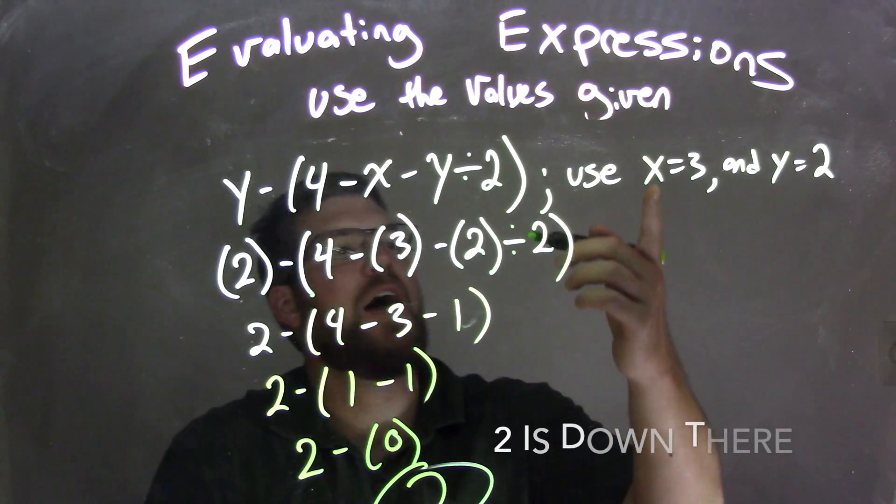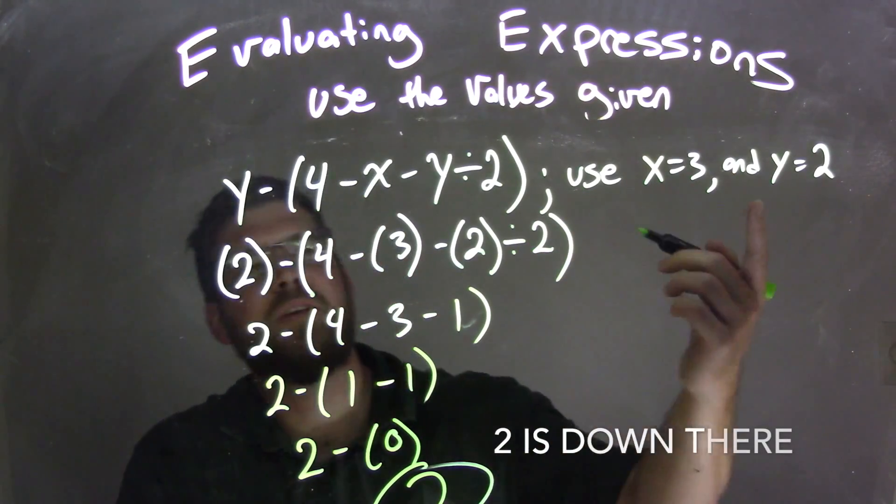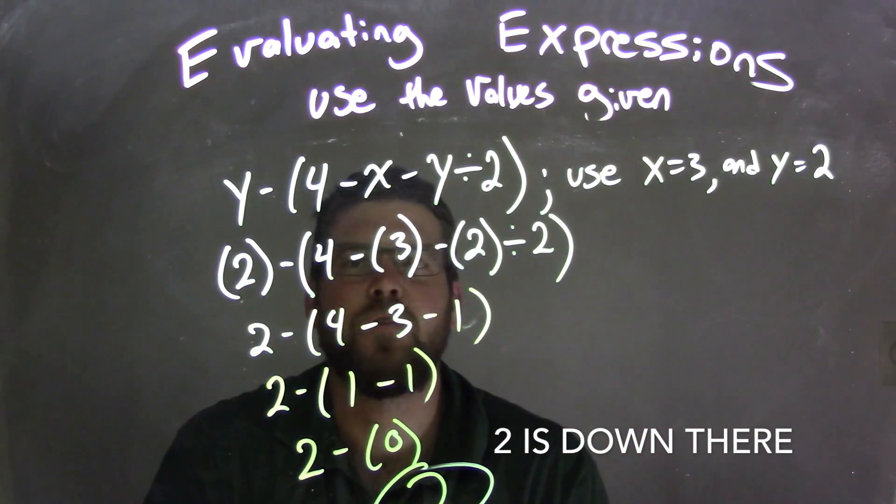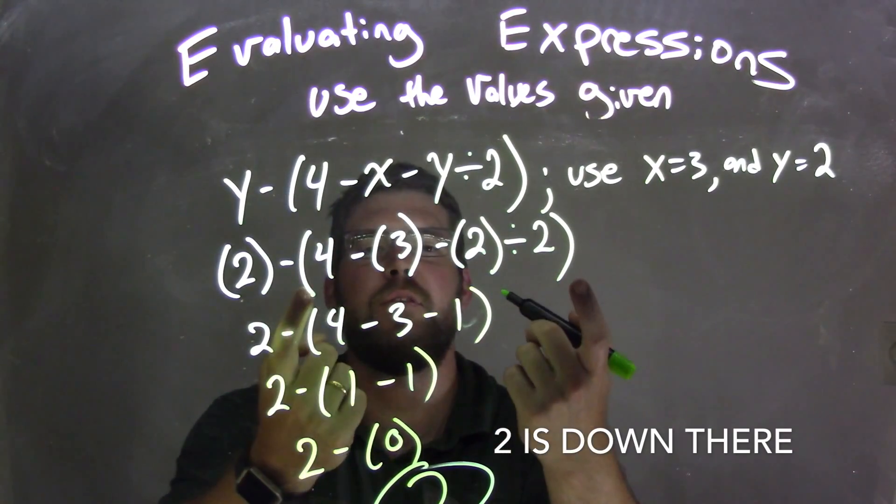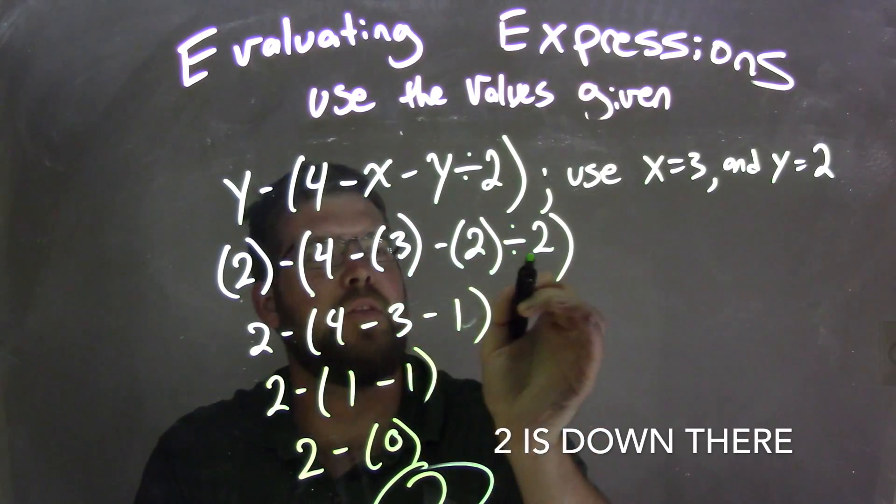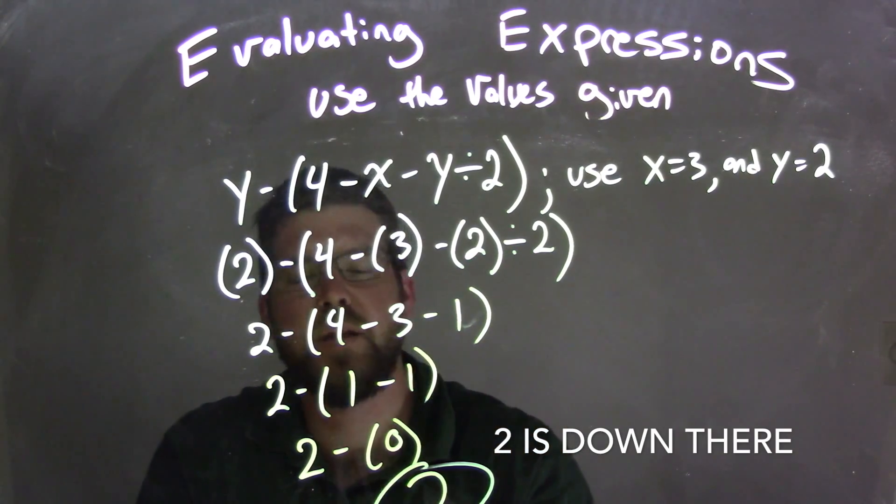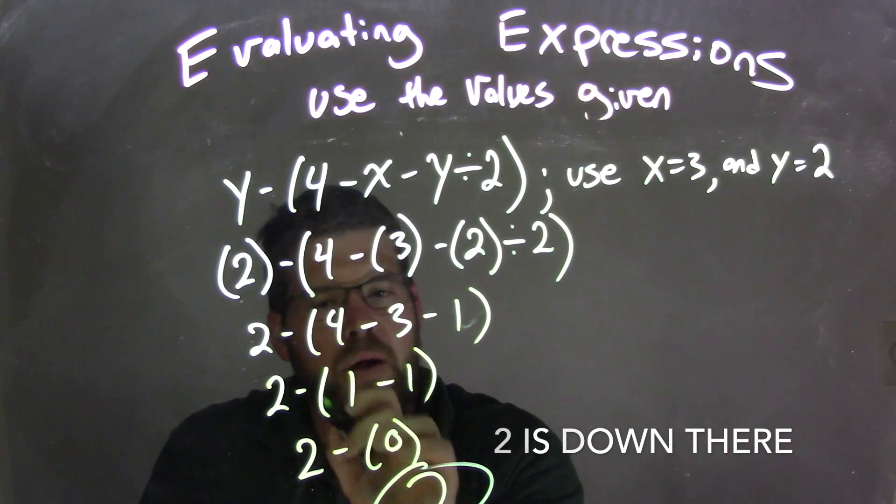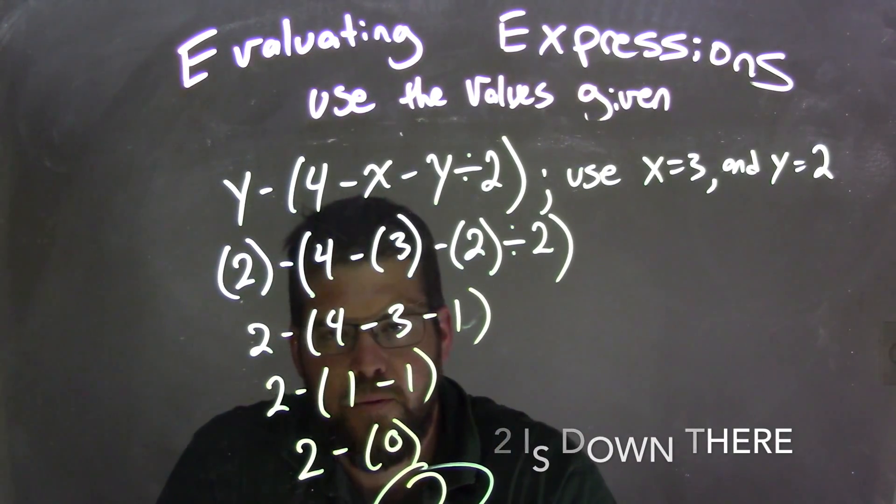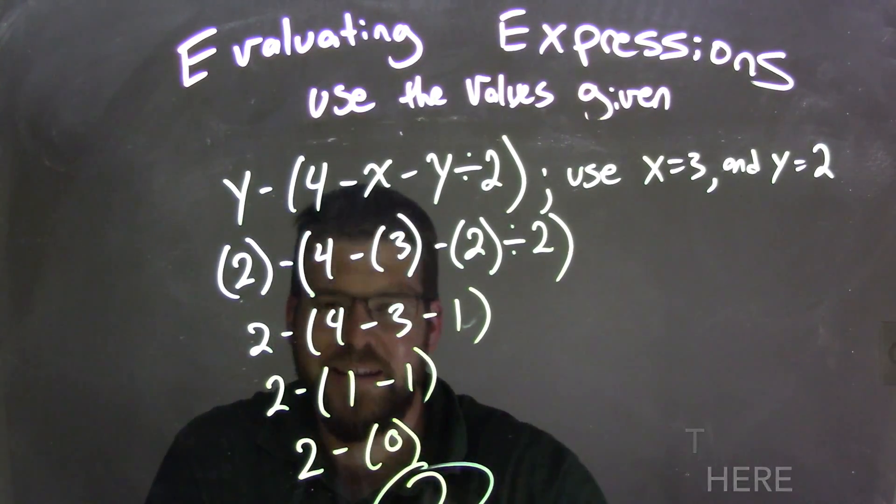So again, quick recap. We have our variables, 3 and 2, we substituted them in for the corresponding variables. Y was 2 and x was 3, we dealt with inside the parentheses first. First operation inside the parentheses was division, 2 divided by 2 is 1. Then 4 minus 3 was our next step, 4 minus 3 is 1. And then 1 minus 1 was in the parentheses, so that became 0. And 2 minus 0 is 2.